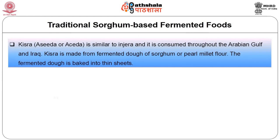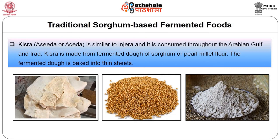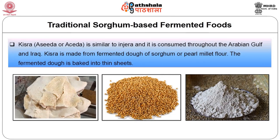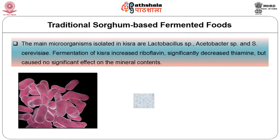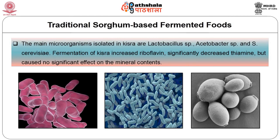Kishra or Acida is similar to Injera and is consumed throughout the Arabian Gulf and Iraq. Kishra is made from fermented dough of sorghum or pearl millet flour, and the fermented dough is baked into thin sheets. The main microorganisms isolated in Kishra are Lactobacillus species, Acetobacter species and Saccharomyces cerevisiae. Fermentation of Kishra increased riboflavin significantly, decreased thiamine but caused no significant effect on the mineral content.